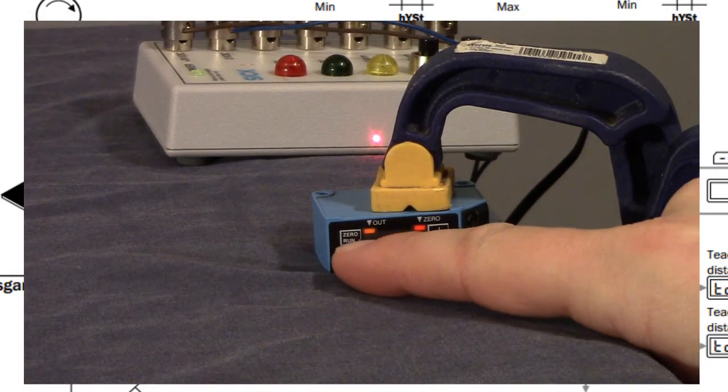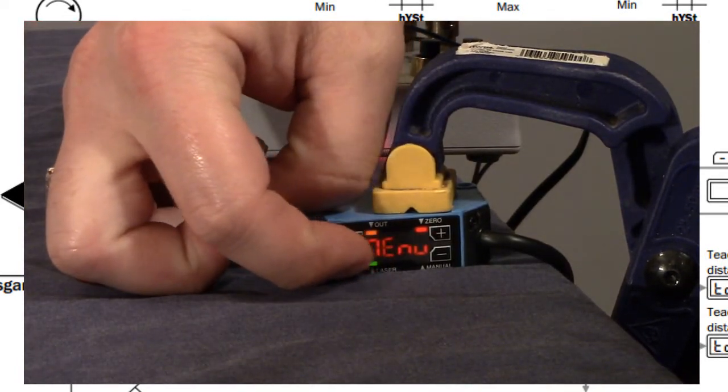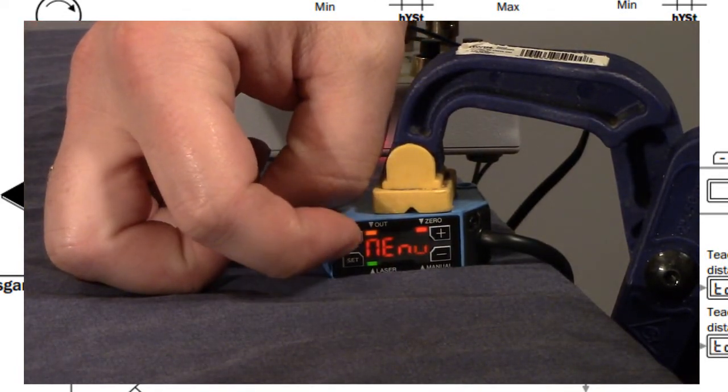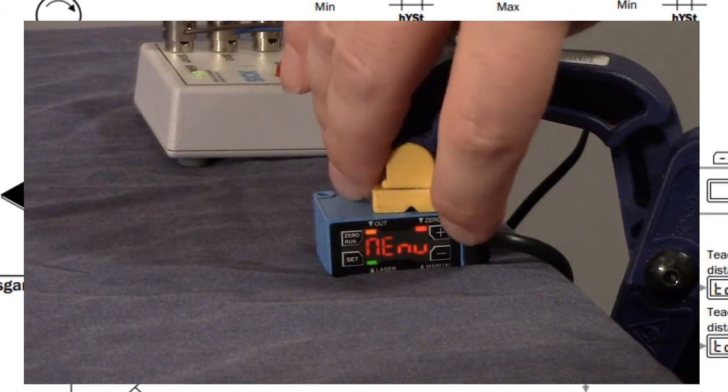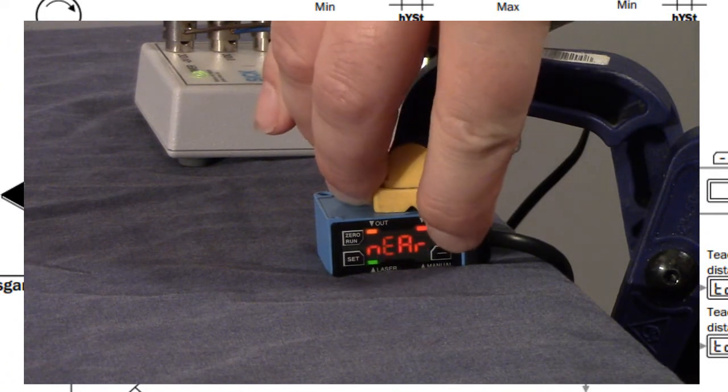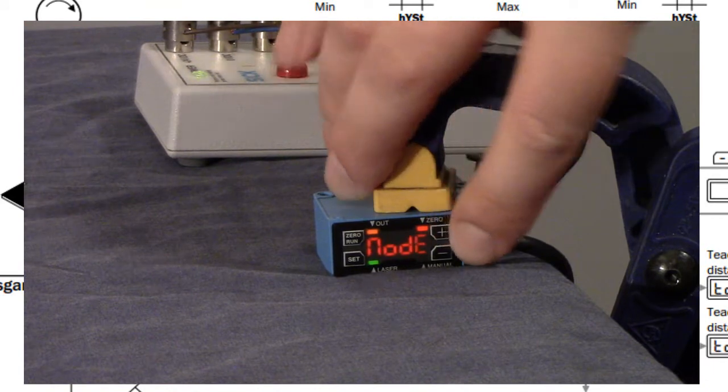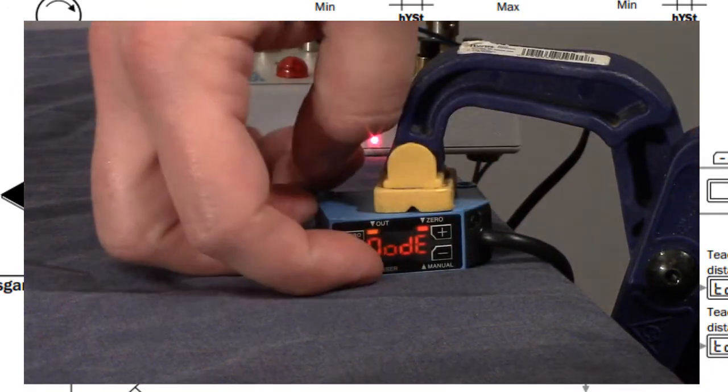Hit the run, the zero and run button and go back to run mode. And from that point forward, anything, any object that is closer than that top distance will give you an output change. Anything further will change the output the other direction. And I'm very specific about being whether the output is on or off. Really later we can decide whether we want an active on or active off. That would be like a light operate, dark operate, normally open, normally close, whichever way you want to call it.